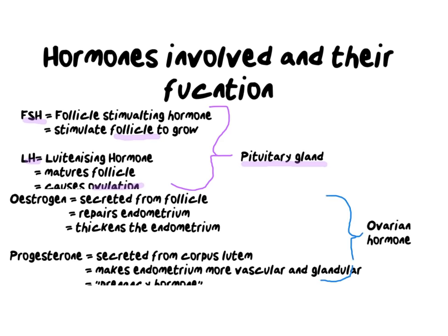Estrogen and progesterone play a really important role in preparing the uterus for a possible pregnancy — even though they come from the ovary, their purpose is to prepare the uterus. The first hormone to be aware of is estrogen, which is secreted by the follicle — the follicle being made by FSH. The purpose of estrogen is to repair and thicken the endometrium, because we lose the uterine lining every month.